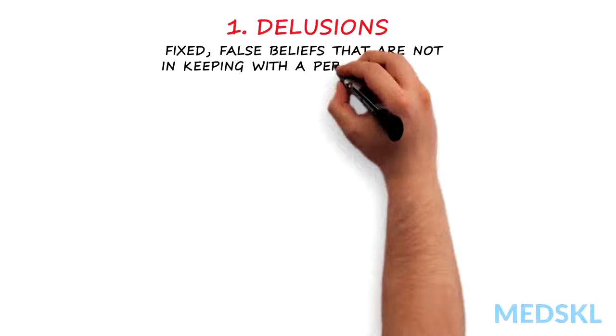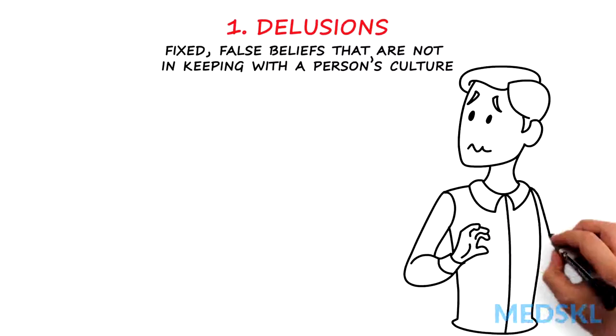1. Delusions. Delusions are fixed, false beliefs that are not in keeping with a person's culture. The beliefs do not change even when conflicting evidence is presented to the individual.